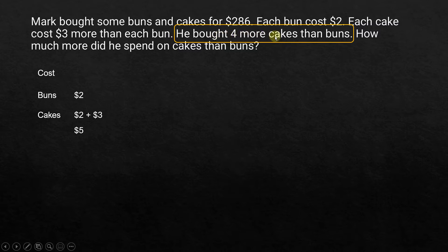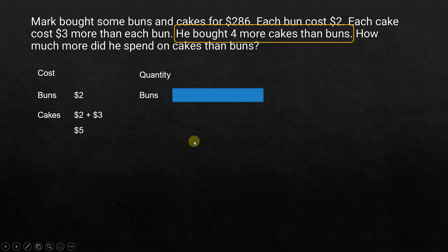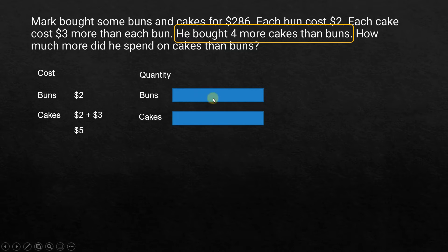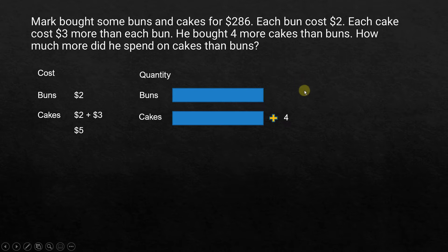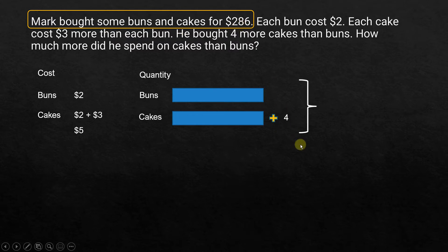The next statement is he bought 4 more cakes than buns — this is about quantity. We don't know how many buns he bought, so let's use one box to represent the number of buns. For cakes, he bought 4 more, so that's the same amount as buns plus 4 extra cakes. Now going back to the first statement: Mark bought buns and cakes for a total of $286, so the cost of everything equals $286.